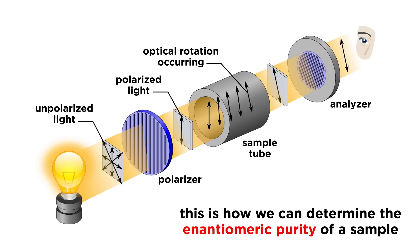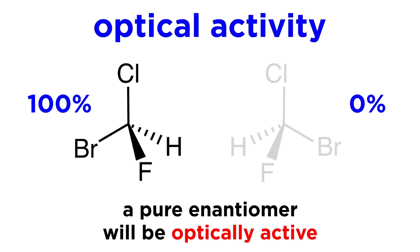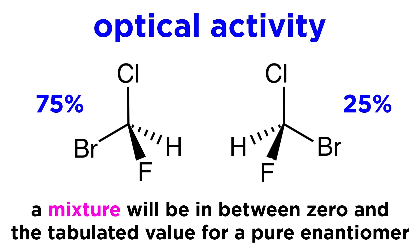We can measure the optical activity of many different compounds and tabulate them, and testing the optical activity of a sample is a way of determining the enantiomeric purity of the sample. If both enantiomers are present in equal amounts, the dextrorotatory and levorotatory activity will cancel out, and the sample will not be optically active overall. If one enantiomer is pure, it will rotate the light according to the tabulated value for that enantiomer. And if the optical activity is some fraction of that of the pure enantiomer, we can do math to find out the ratio of one enantiomer to the other in the sample.